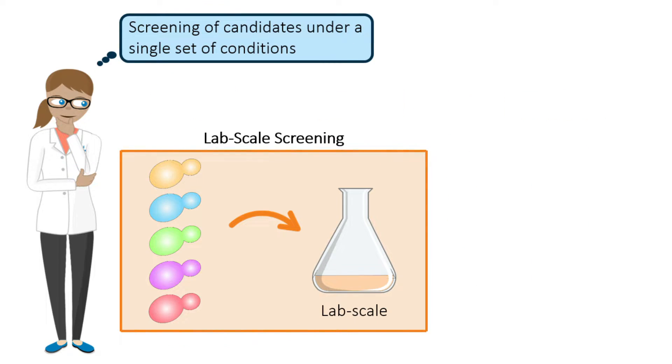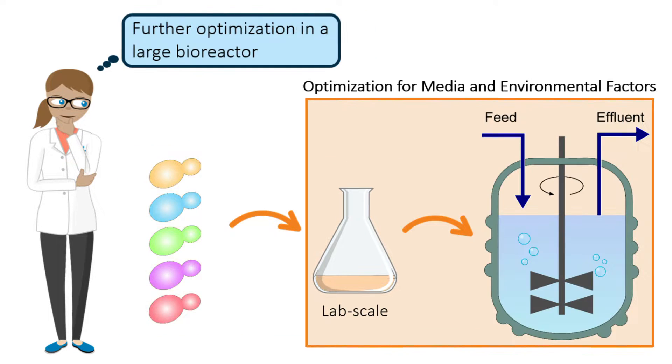Screening of candidate strains are usually done in a lab-scale environment under a single set of conditions. The best performing strains are then selected to be optimized further for growth in a larger bioreactor.